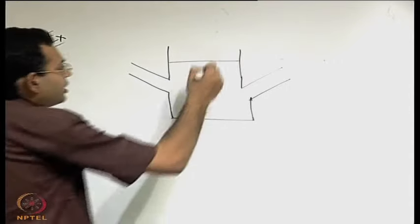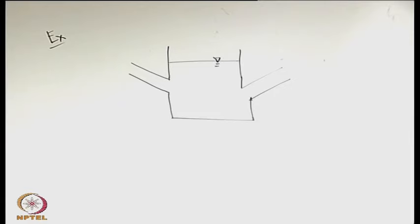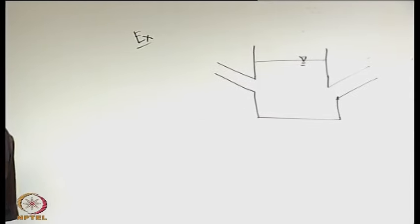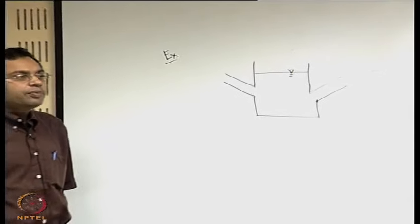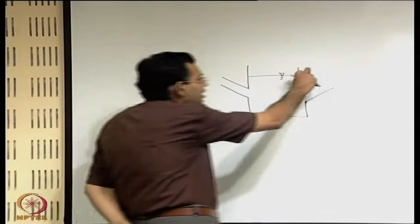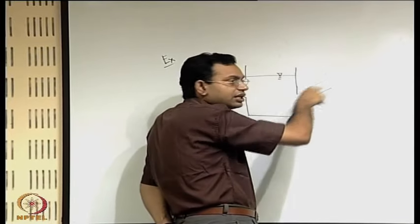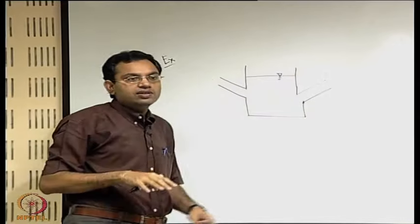There is a tank with a free surface. In the previous problem, we assumed that there is no change in the level of the surface in the tank, but in reality that does not happen. In reality it may happen that approximately the change in this level is zero, because the tank has such a large area that no matter what is entering and leaving, it is not changing the height. These types of tanks are called constant head tanks.